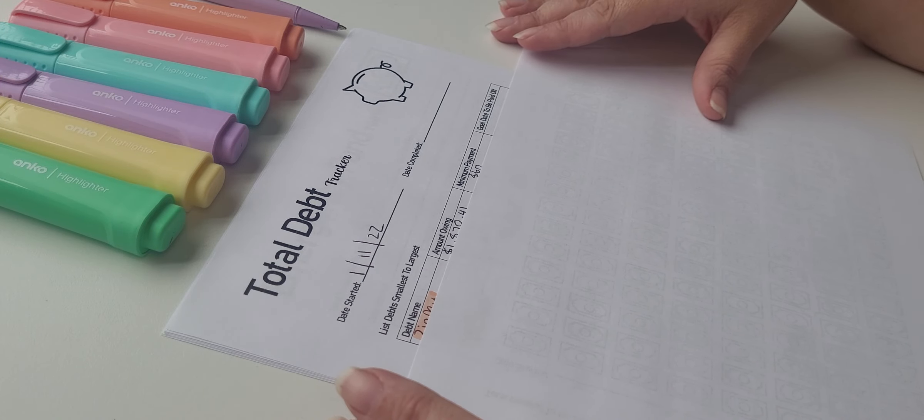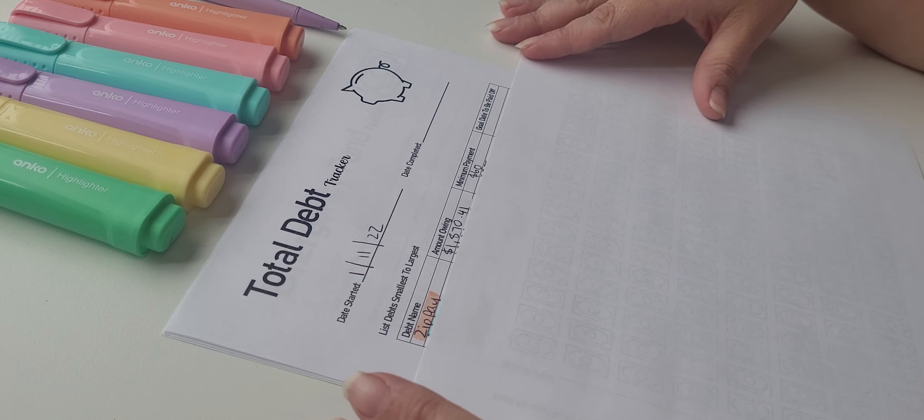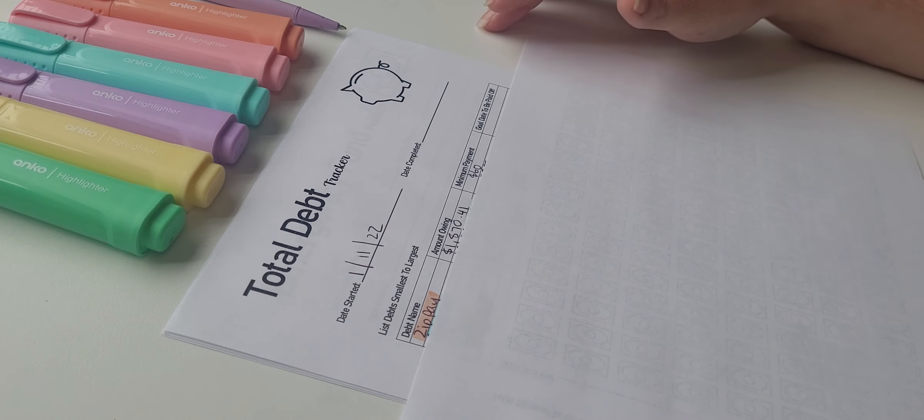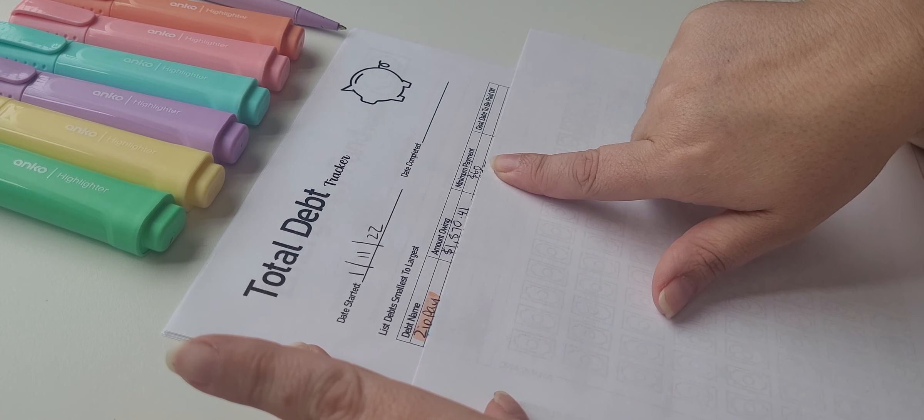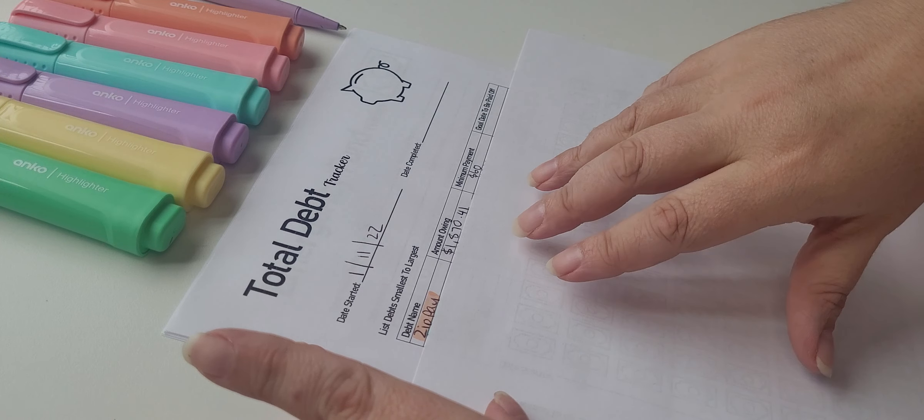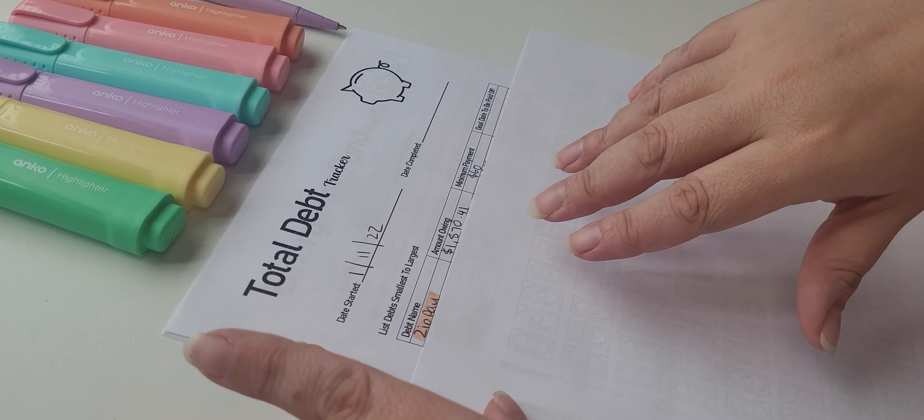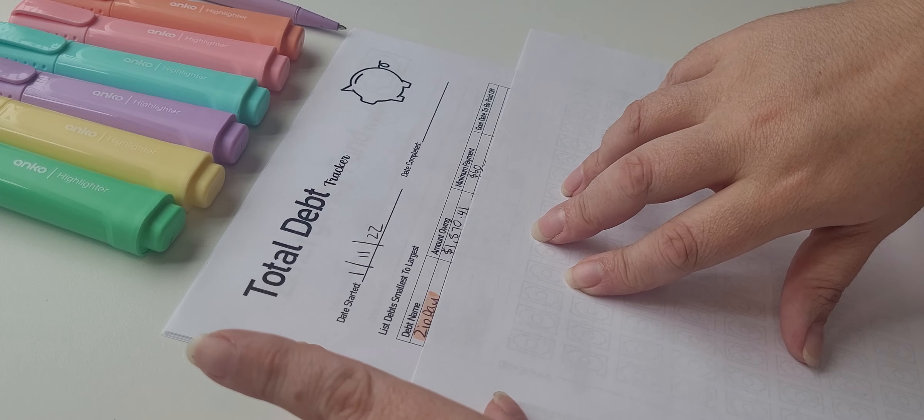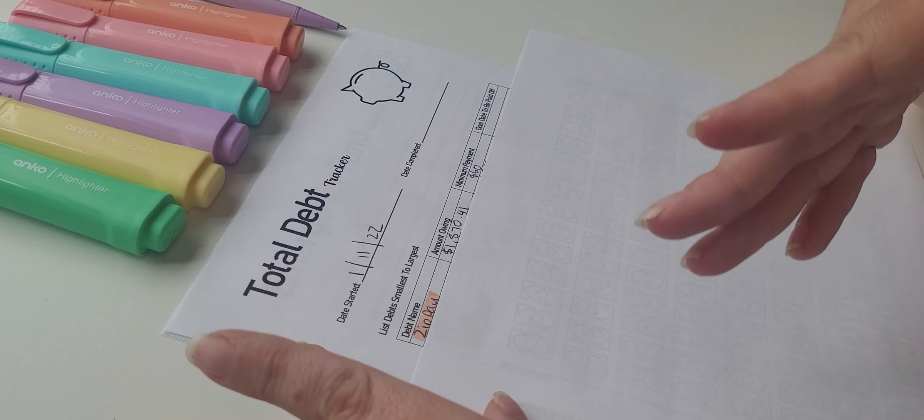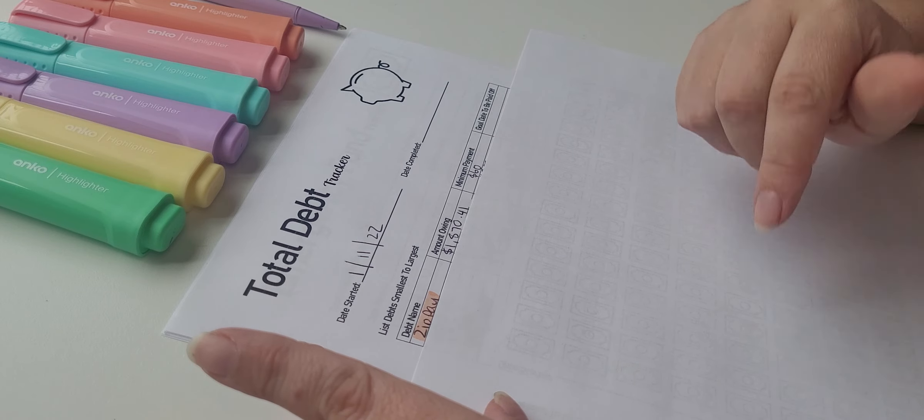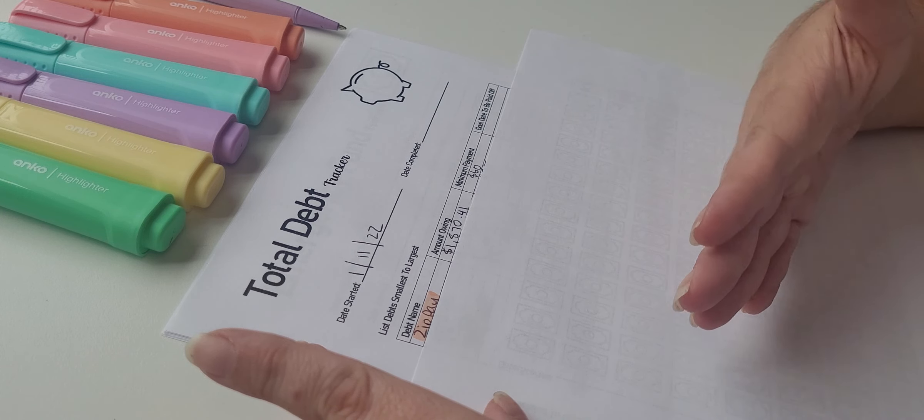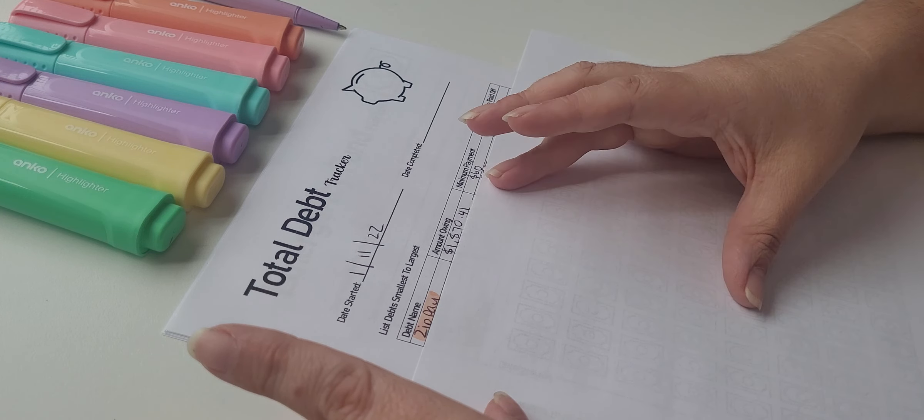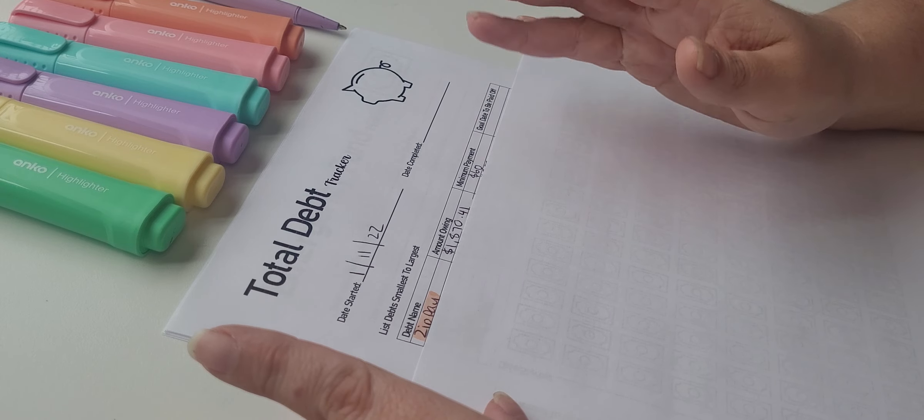So here we go. We list our smallest to largest, Dave Ramsey style. So after our emergency fund, we will be focusing on this zip pay. Now I haven't included my after pay on our debt total only because they are coming from our sinking funds. I don't quite see them. I know it's debt. I'm not silly. I know it's debt.